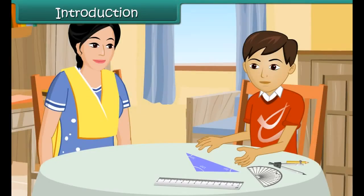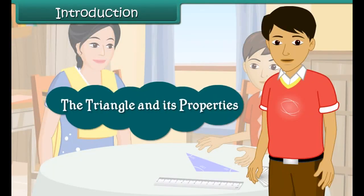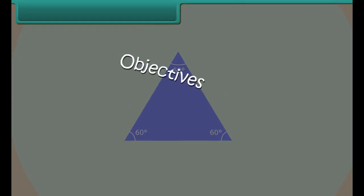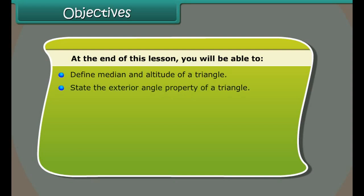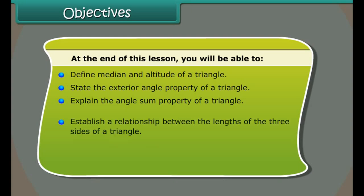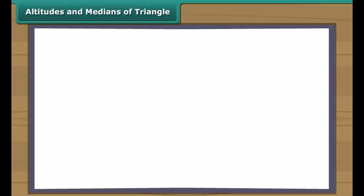In this lesson you will learn about the triangle and its properties. At the end of this lesson you'll be able to: define median and altitude of a triangle; state the exterior angle property of a triangle; explain the angle sum property; establish a relationship between the lengths of the three sides; discuss properties of equilateral and isosceles triangles; and explain the Pythagoras property of a right-angled triangle.